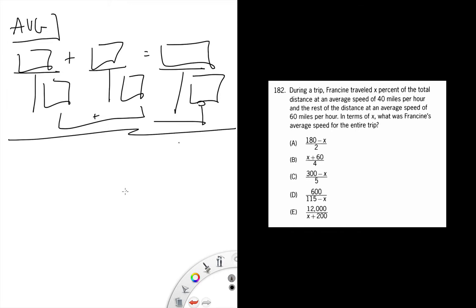You could do this algebraically or by picking numbers. Let's start with the algebra. I would fill in the easy information first: the rates 40 and 60, very easy to place. We're looking for the average speed for the entire trip, so maybe put a box there just to remind yourself. We know that Francine traveled x percent of the total at 40 and the rest at 60.